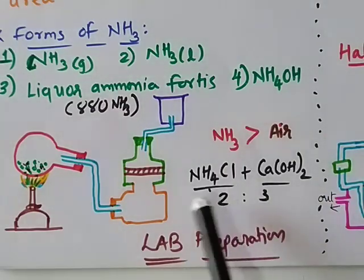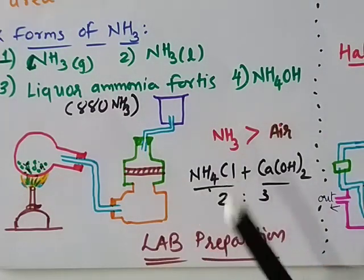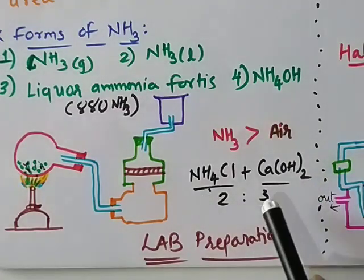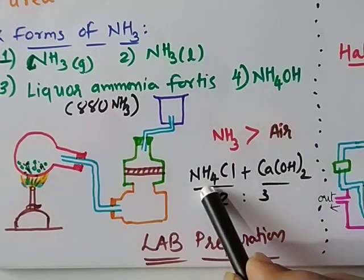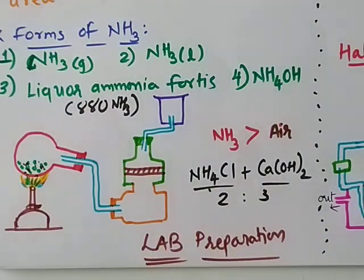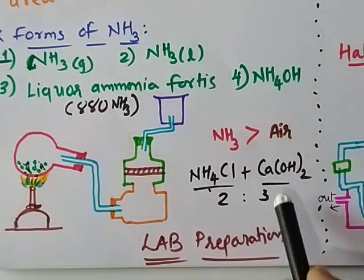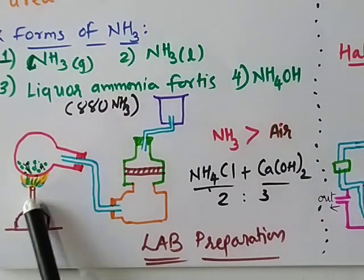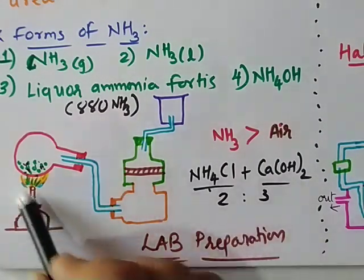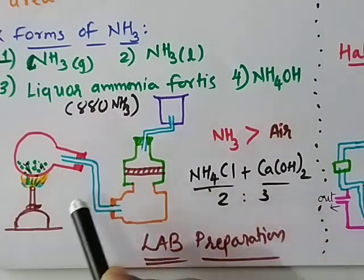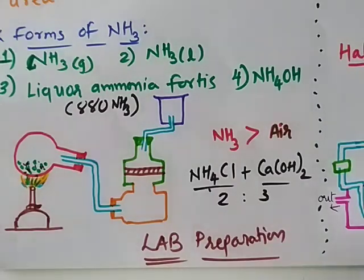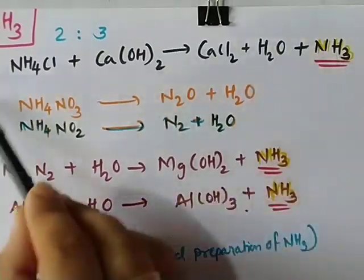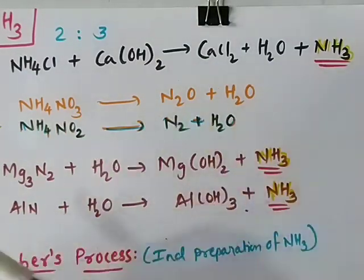The reason for the 2:3 proportion is that ammonium chloride is a sublimating agent, so a higher ratio by weight of the alkali can counteract the loss due to sublimation of NH4Cl. We provide heat from the bottom. When NH4Cl and Ca(OH)2 are mixed and heated, the reaction produces calcium chloride, water, and ammonia.